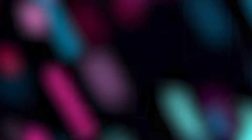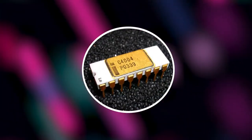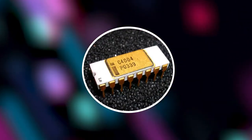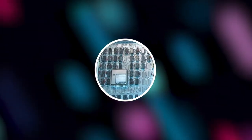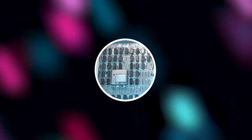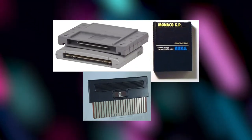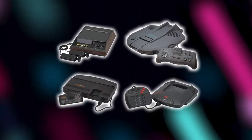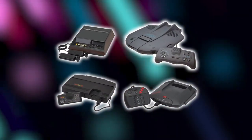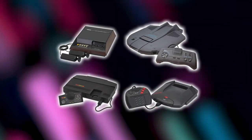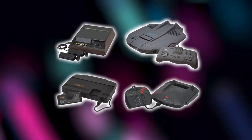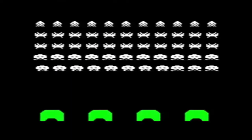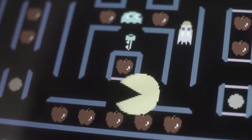By the mid-1970s, low-cost programmable microprocessors replaced the discrete transistor logic circuitry of early hardware, and the first ROM cartridge-based home consoles appeared, combined with rapid development in a golden age of arcade video games with titles like Space Invaders and Pac-Man.